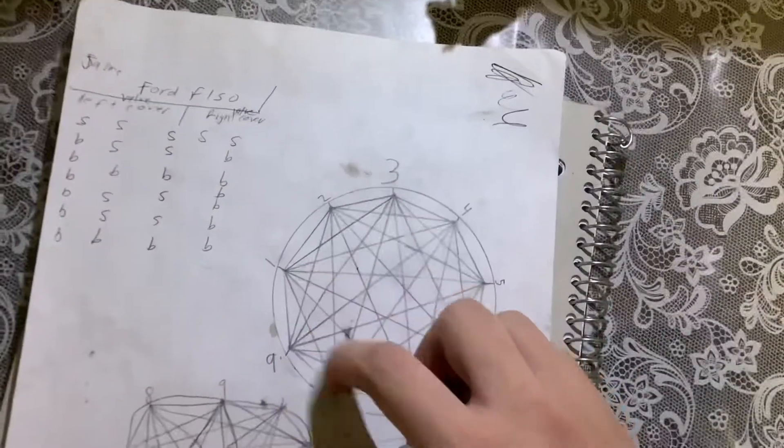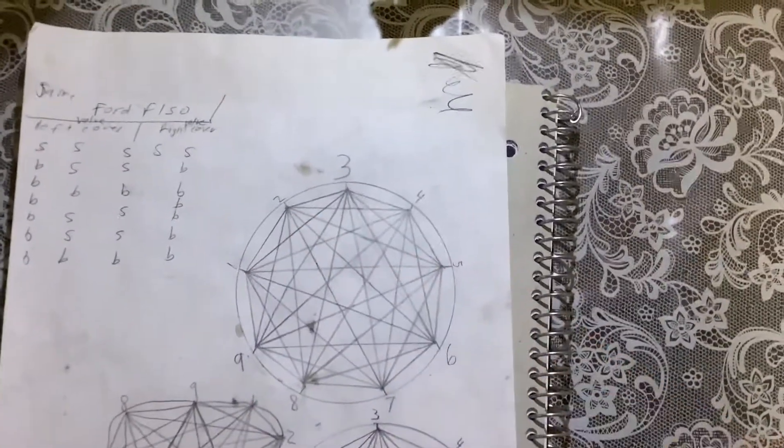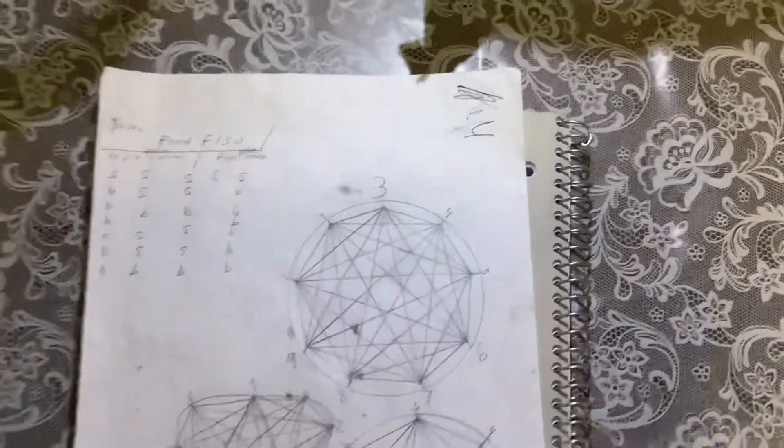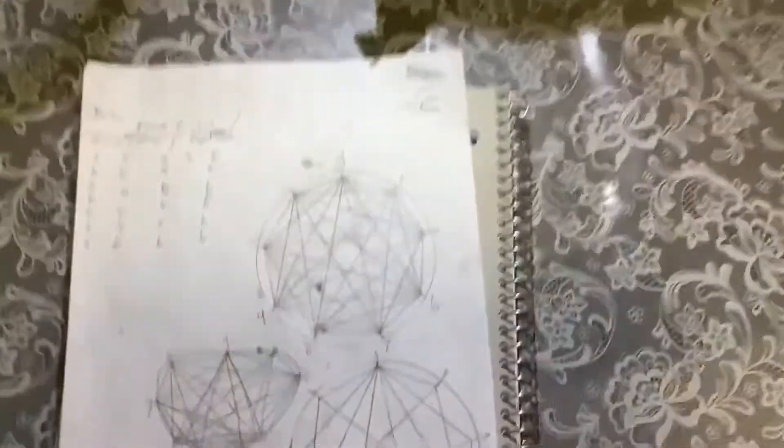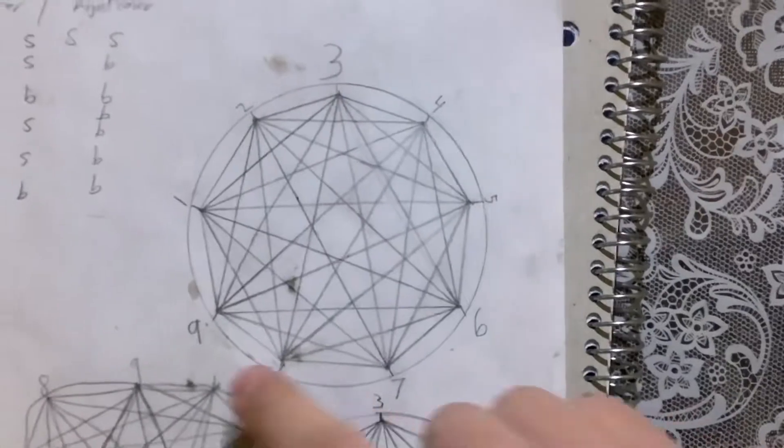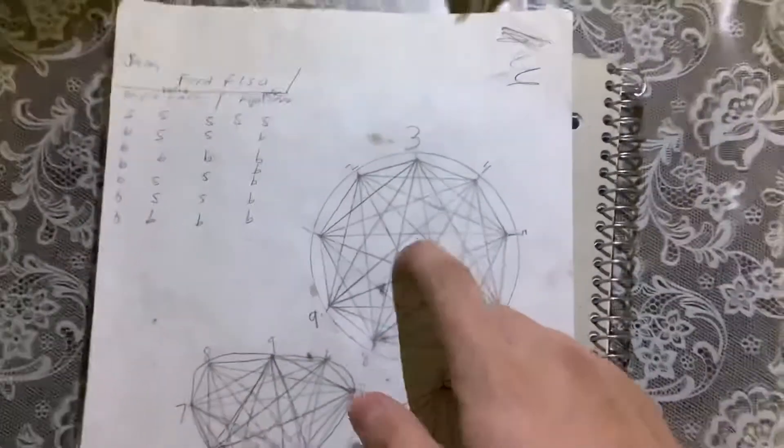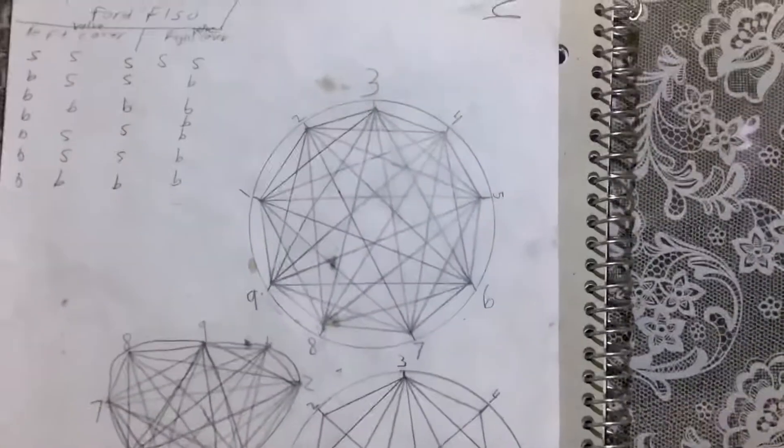And then I connected all of them to each other - so 1, 2, 3, 4, 5, 6, 7, 8, 9 and so on and so forth. And then I realized this one kind of looks like the Masonic symbol that they have for their thing or whatever.